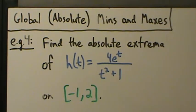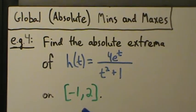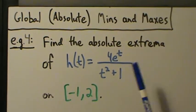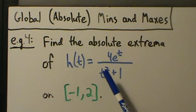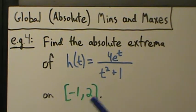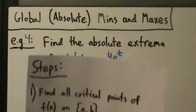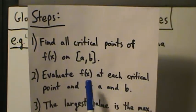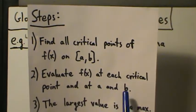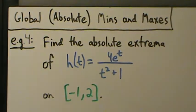Here's example four with finding global or absolute min's and max's on a closed and bounded interval. Find the absolute extrema of h of t equals 4e to the t divided by t squared plus 1, on the closed bounded interval from negative 1 to 2. Since we're on a closed and bounded interval, we just have the shorter process to follow: find all the critical points of the function on the interval, evaluate the function at each critical point and at each endpoint, then interpret the results. Largest value is the max, smallest is the min.